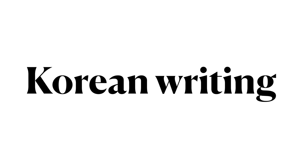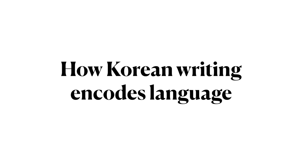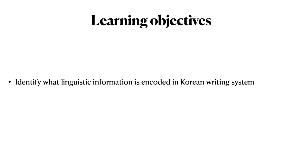This is Ling 270, Language, Technology, and Society. In this module, we're examining how writing represents language, looking at various writing systems. In this video, let's explore the Korean writing system. How does the Korean writing system encode the Korean language? Our learning objective in this video is to identify what linguistic information is encoded in the Korean writing system.